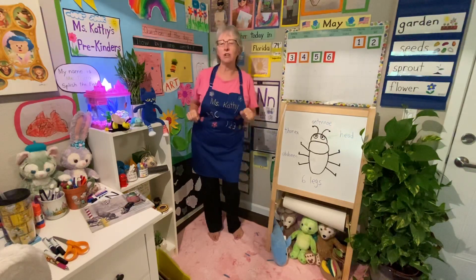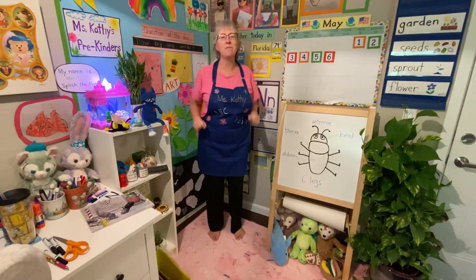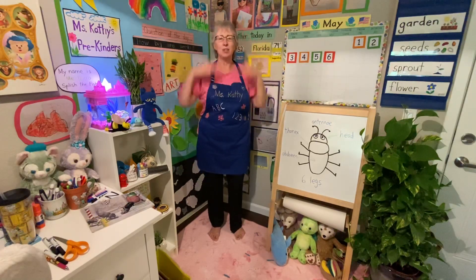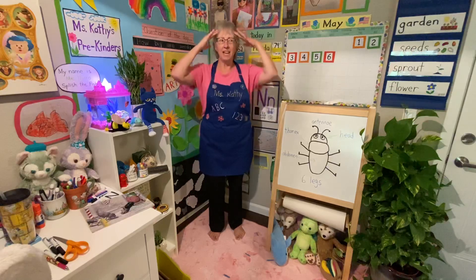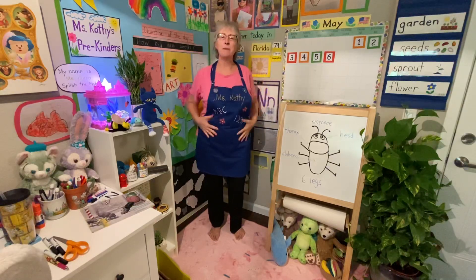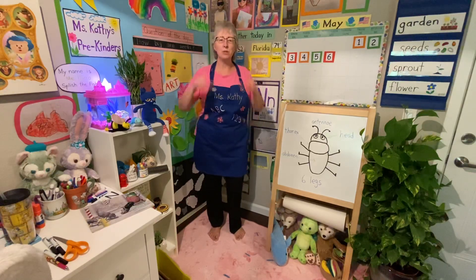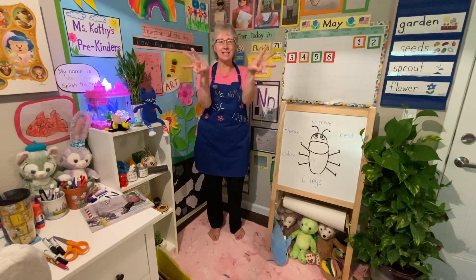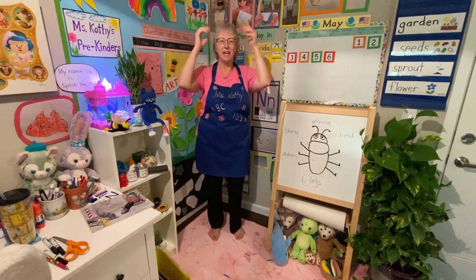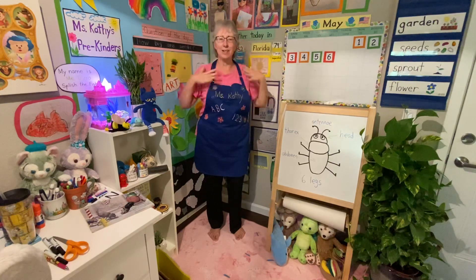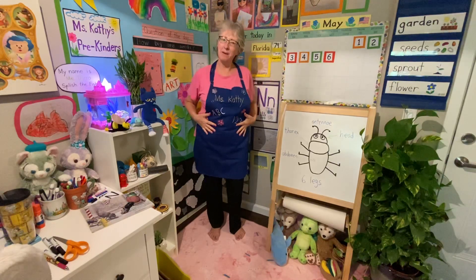All right boys and girls, one more time — faster! Ready? Head, thorax, abdomen, abdomen — head, thorax, abdomen, abdomen — two eyes, six legs, and antennae two — head, thorax, abdomen, abdomen!